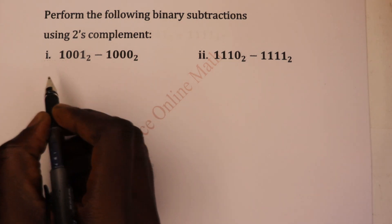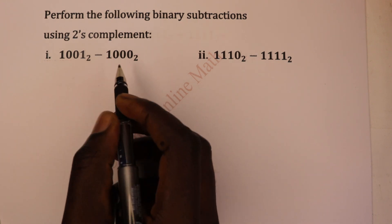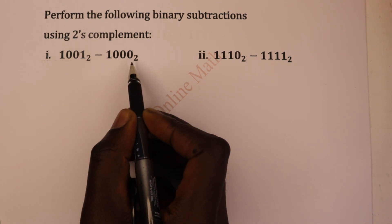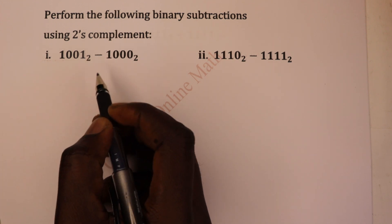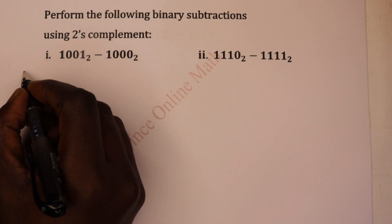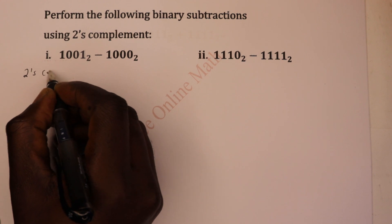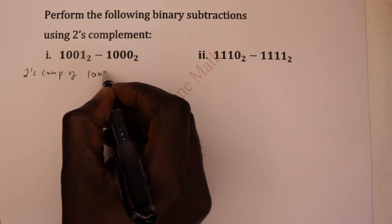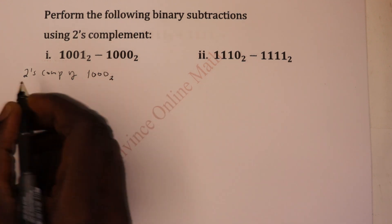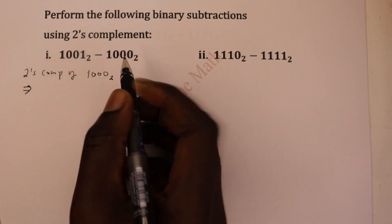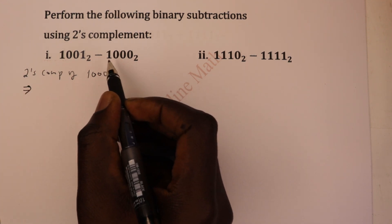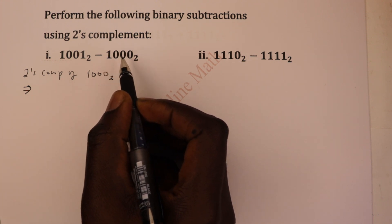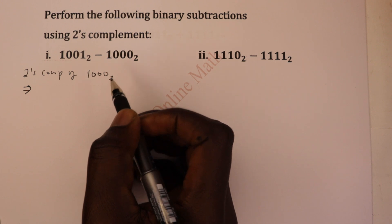In this case, the first thing to do is to get the two's complement of the number you're subtracting — the subtrahend. So we get the two's complement of 1, 0, 0, 0 base 2. This is how you do it: you invert the digits so that where there's a 1 you put a 0, and where there's a 0 you put a 1, and then you add 1 to that.